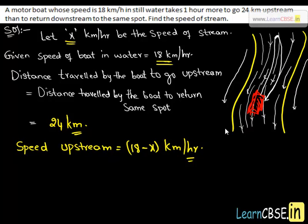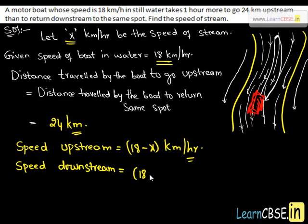Similarly, the speed of the boat when it is coming back downstream to the same spot is 18 plus x kilometers per hour. It is because when the boat sails downstream, the speed of the stream helps the boat and increases its speed, therefore its speed is 18 plus x kilometers per hour.